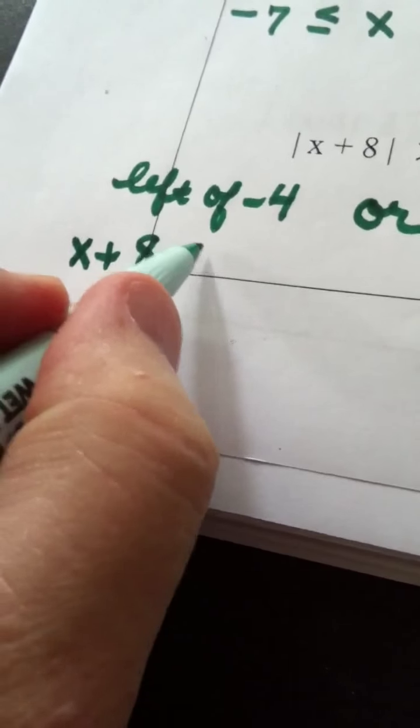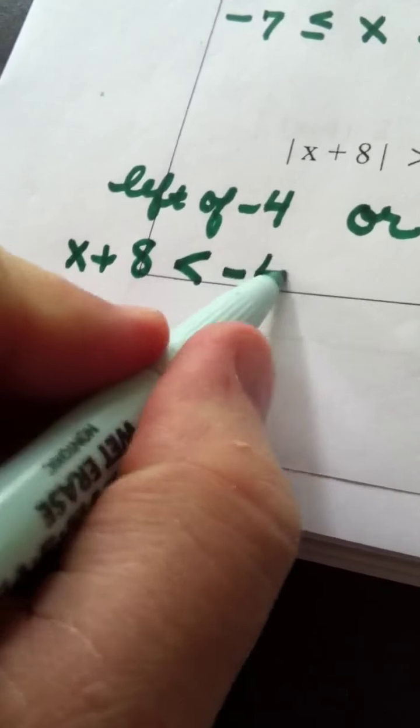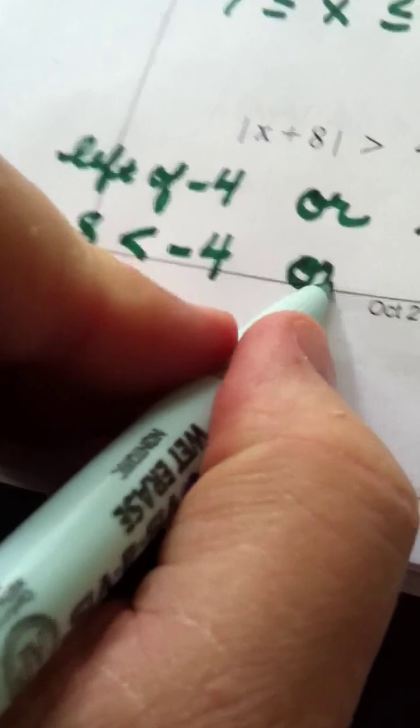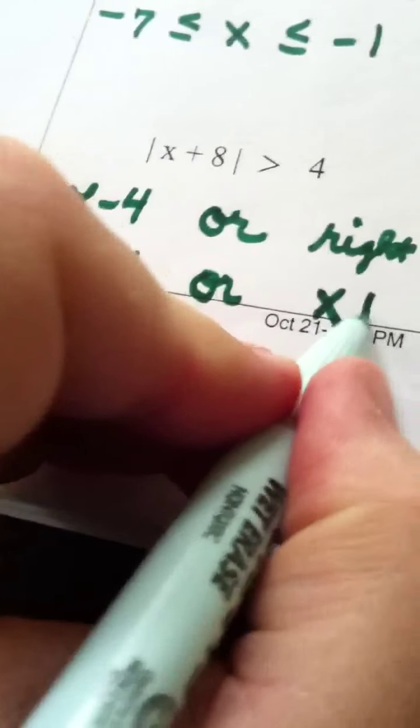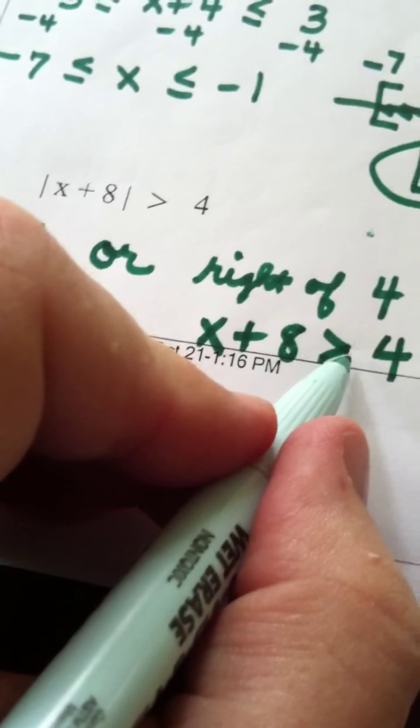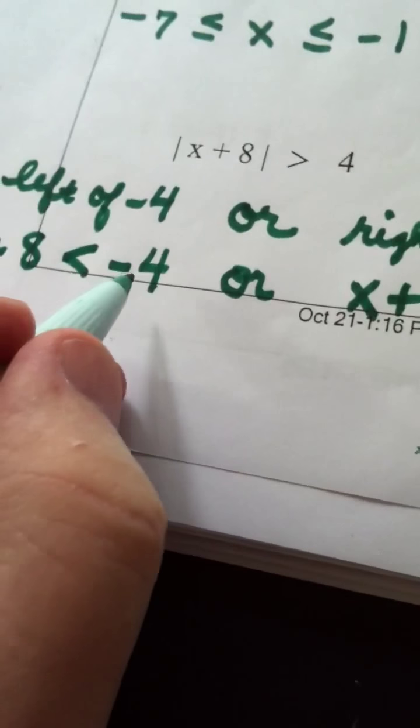x plus 8 is the thing we're talking about. x plus 8 is less than negative 4. The tip points to the left, or, and here, x plus 8 is greater than a positive 4. Tip points to the right this time. So, less than the negative, greater than the positive.